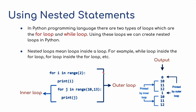Here's an example in Python. There are two types of loops: the for loop and the while loop, which you should be familiar with from a previous video. Using these loops we can create nested loops in Python. Nested loops mean loops inside a loop — for example, a while loop inside a for loop, or a for loop inside another for loop.